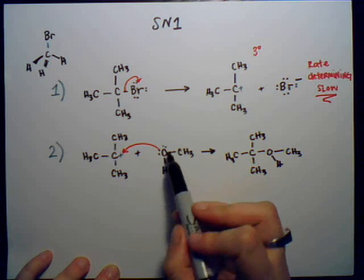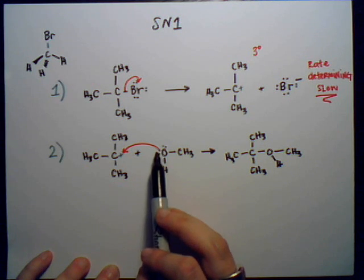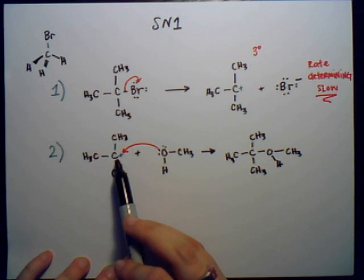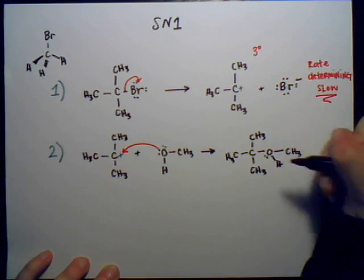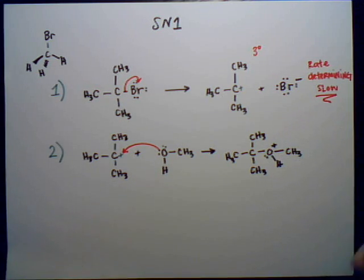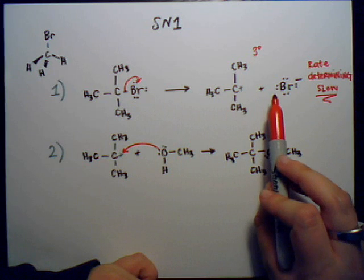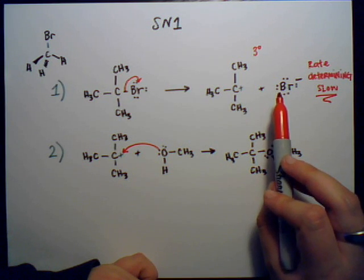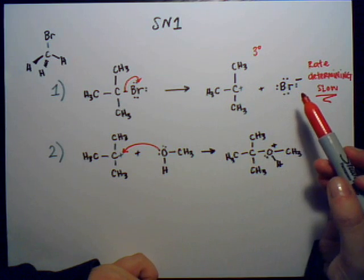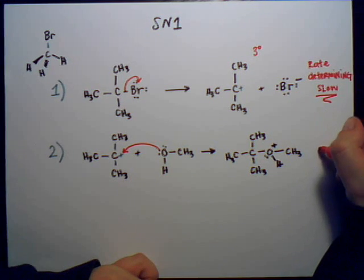The oxygen on methanol had two lone pairs, and one of those went to form the bond with the carbon. So now it only has one lone pair left, and since it gave that away, the oxygen now has a slightly positive charge. This step actually happens pretty quickly — it's a fast step, not rate-determining at all. Since only the first step is responsible for the rate of the reaction, that's why it's called an SN1 reaction.